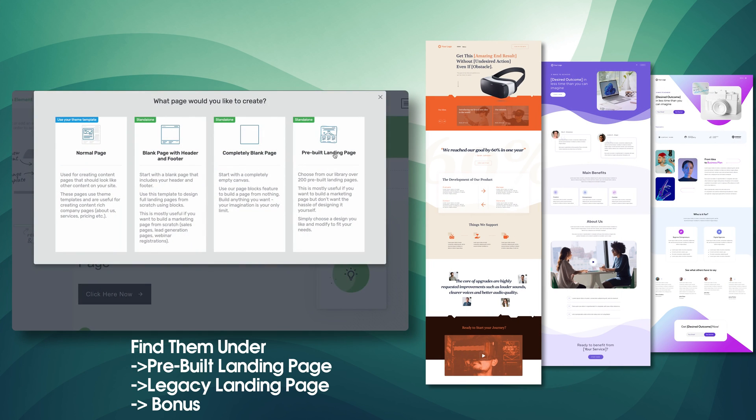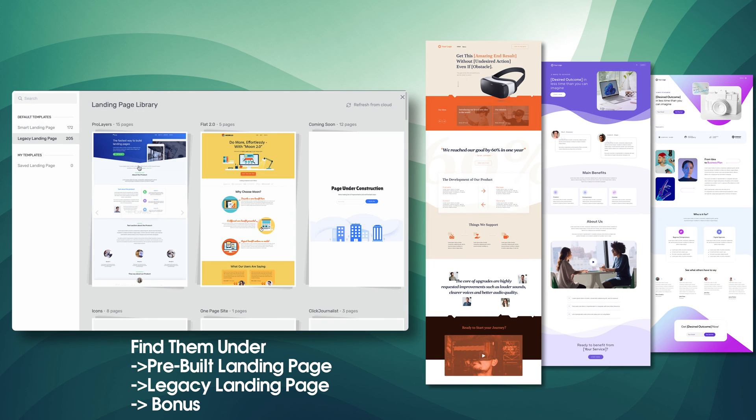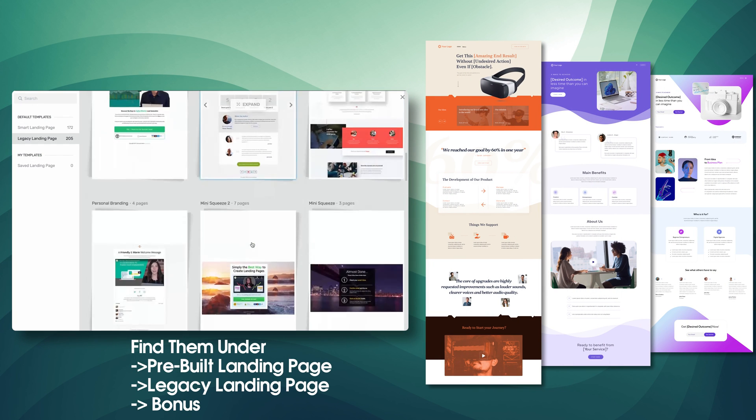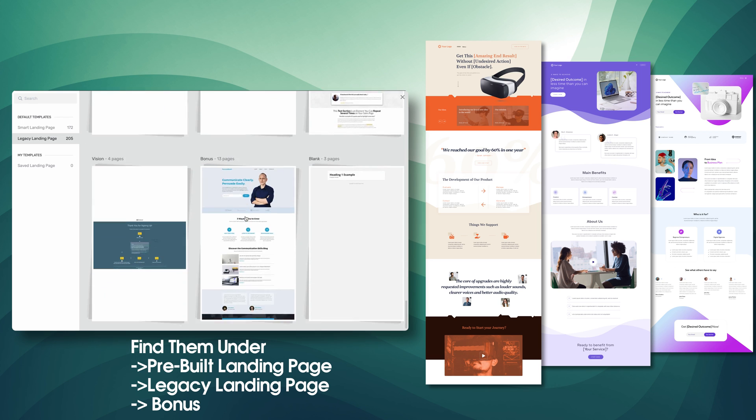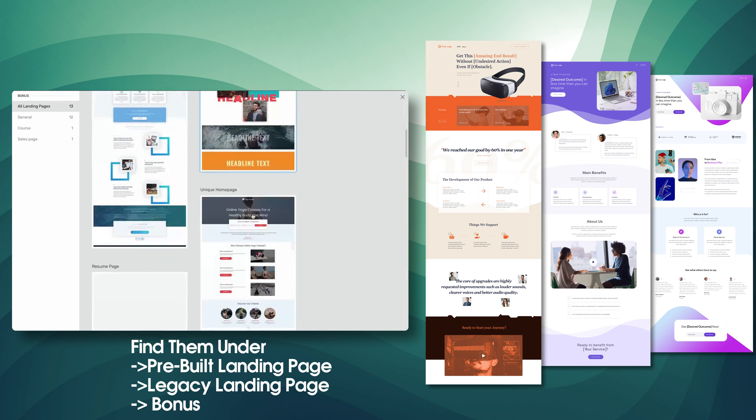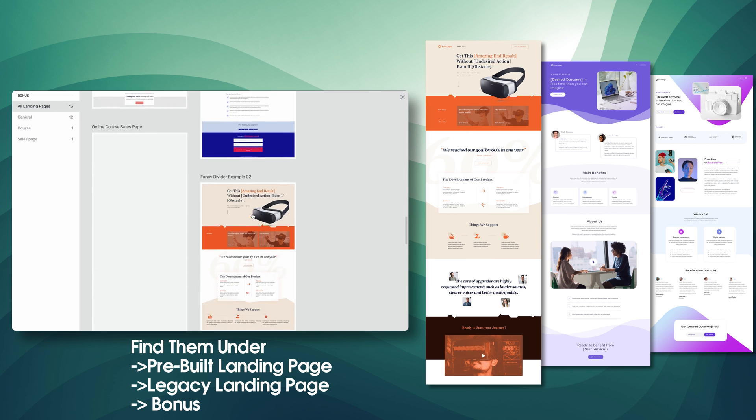And here's the big surprise: all of the good landing pages that you've seen today are ready for you to use inside Thrive Cloud. Simply create a new page inside WordPress, open it up with Thrive Architect, and choose the option to start from a pre-built landing page. You will be able to pick any of the ones I've shown you today. I truly hope you found this video useful — I've had a blast recording it. One special mention for our awesome design team for putting these landing pages together. Thanks for watching!